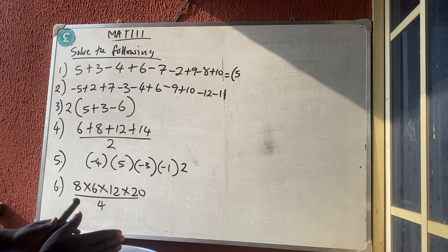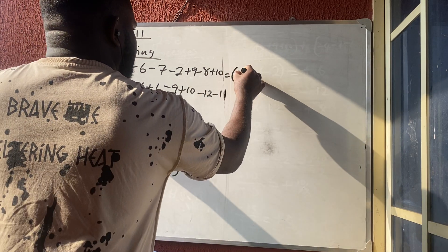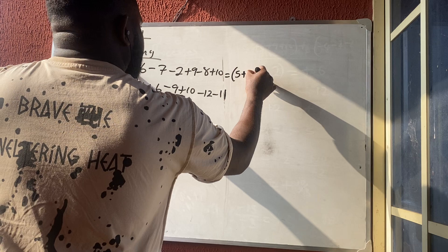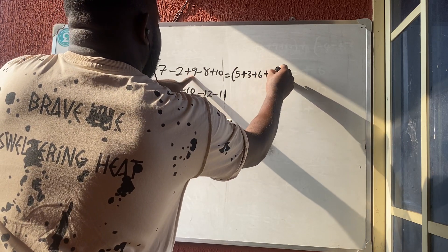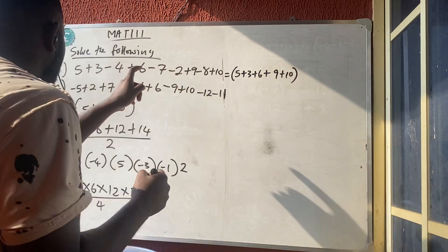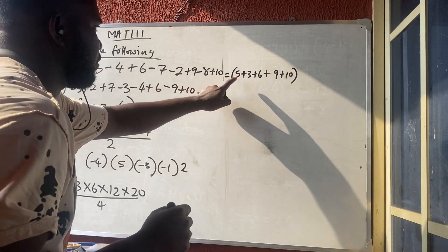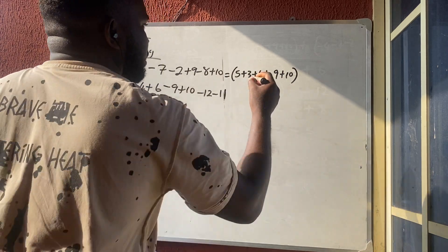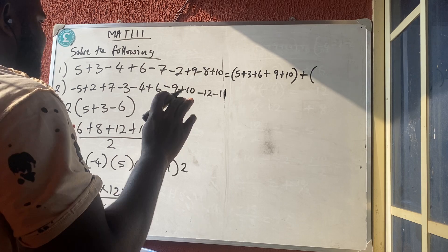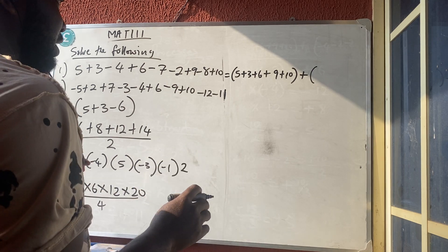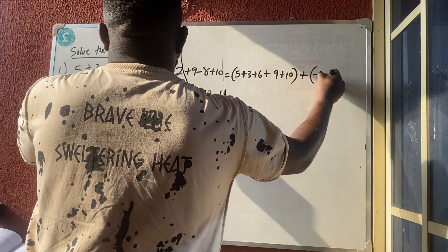For problem 1, the positive numbers are: five plus three plus six plus nine plus ten — that's five positives. We separate them with plus because plus does not affect anything. It's the minus sign that is so powerful it can change everything.